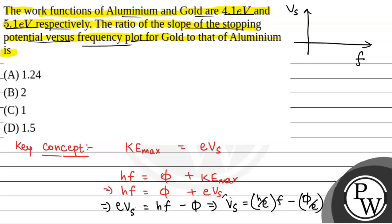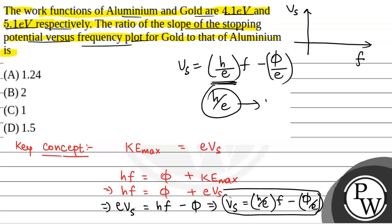From the equation we have Vs is equal to h by e times f minus phi by e. So here slope is h by e which is constant.